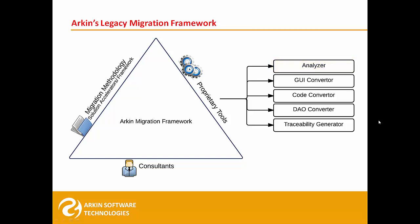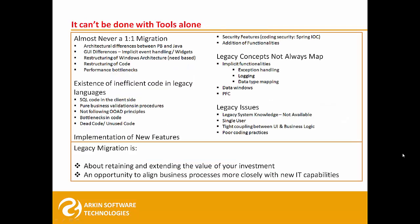The other important tool is the Traceability Generator. It maps legacy and auto-converted code blocks in a spreadsheet, serving as a beacon for consultants to identify code blocks that need manual attention. As much as we would like, no migration can be 100% automatic — there are always areas that need manual attention.